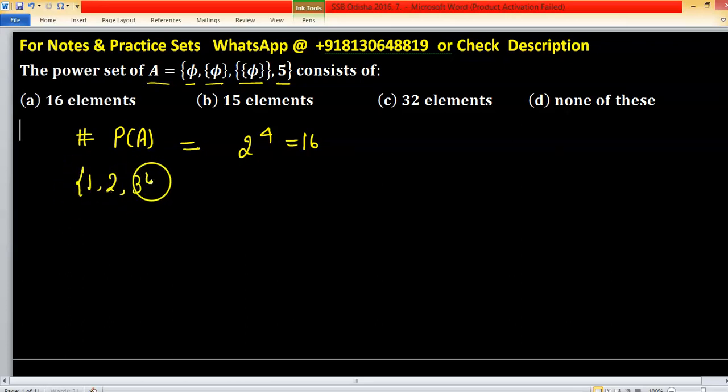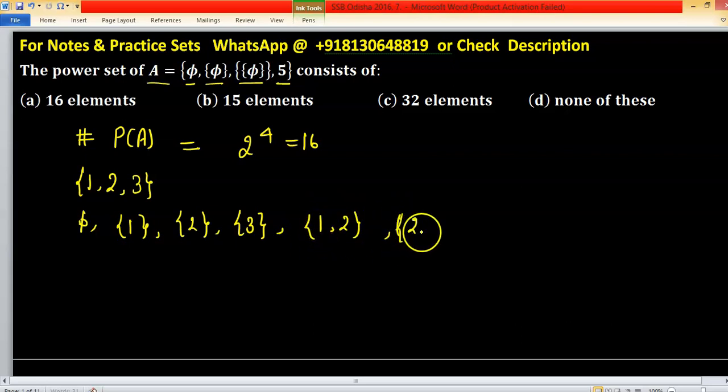a set 1, 2, 3. This is a set and we are calculating elements in power set. So empty set always there in power set, again 1, you can take 2, 3, then combine 2 elements: 1 and 2, 2 and 3, 1 and 3, and last set itself, means 1, 2, 3.